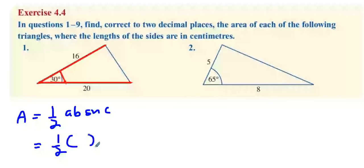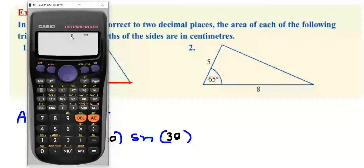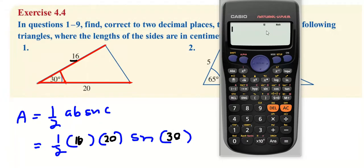Essentially what you're doing is one half blank times blank sine blank. Now you're going to use this every time. So a can be 16 or 20, it doesn't matter which one you choose. B is the other length, 20, and c has to be the angle that's in between them. Then you go to your calculator, make sure it's in degrees mode, which means it says D.